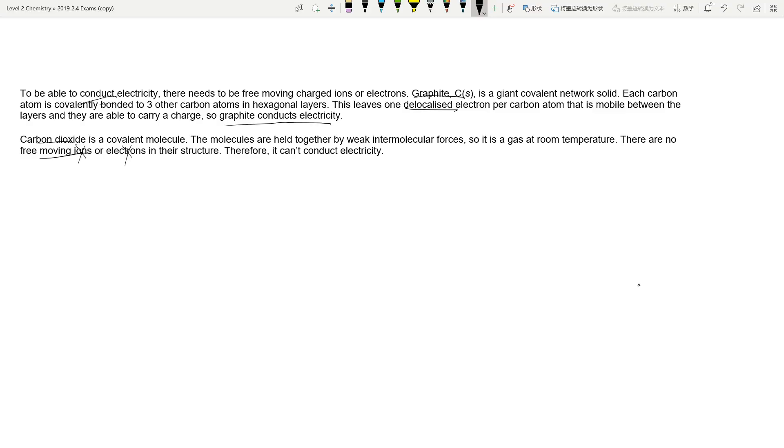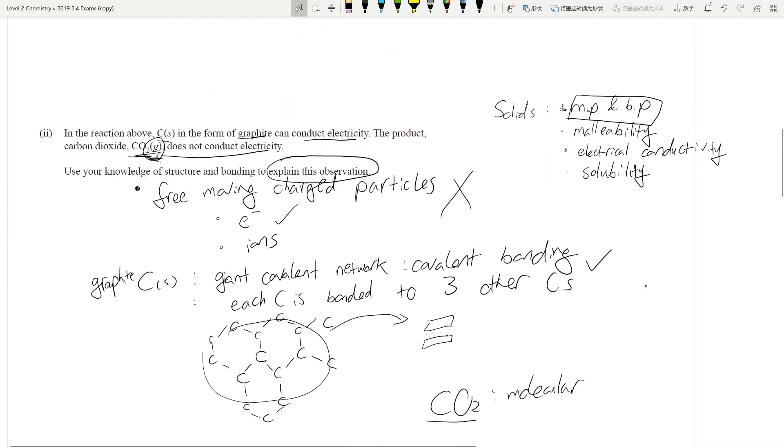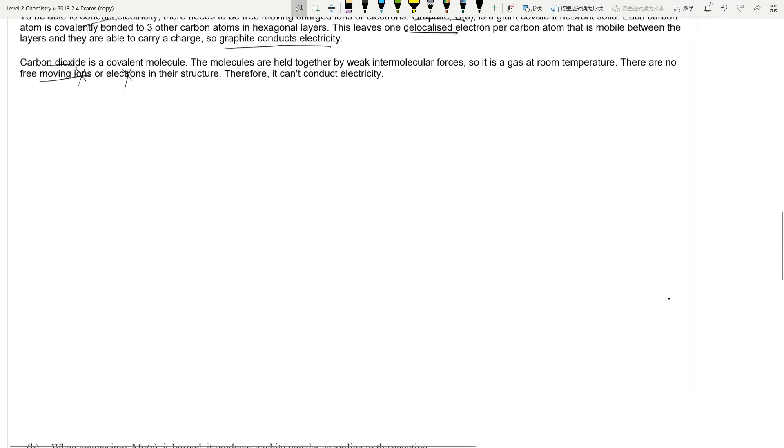This is like a really hidden thing. This is the type of analysis. It is very much road learning. You have to talk about the condition to conduct electricity, what you need to have, and then you need to talk about what each of these structures, what type of solid are they, what type of bonding do they have, and do they meet this particular criteria of electrical conductivity.